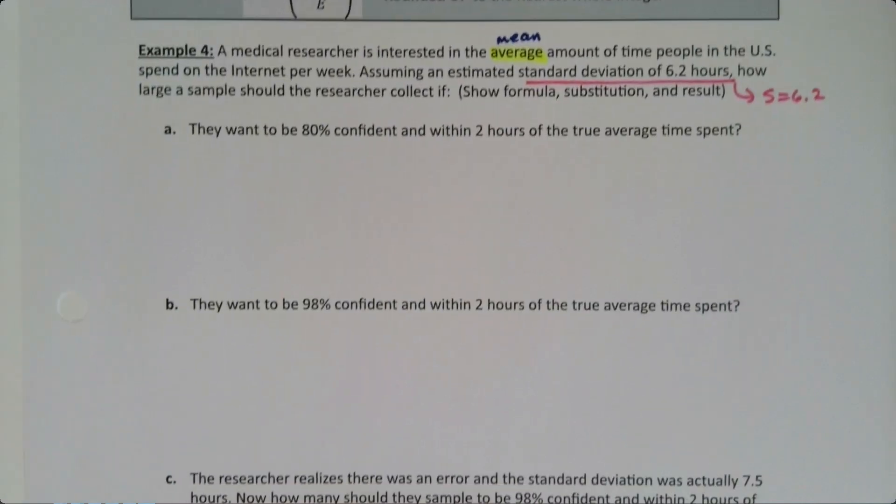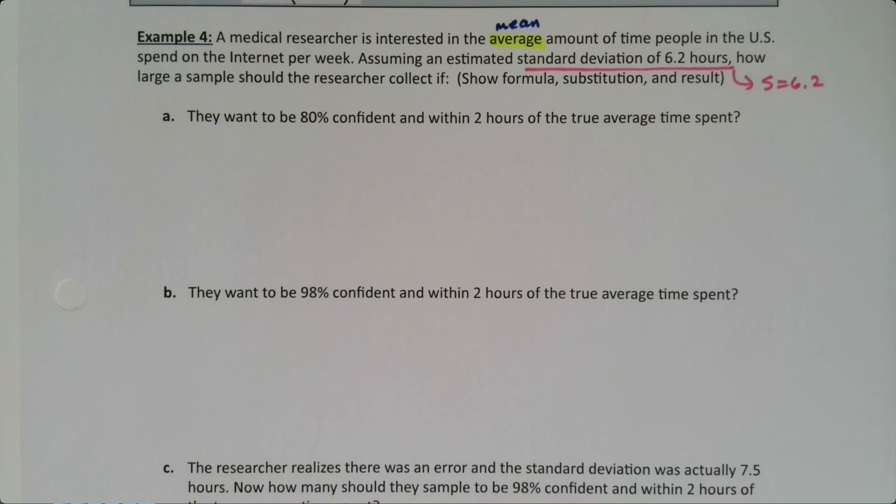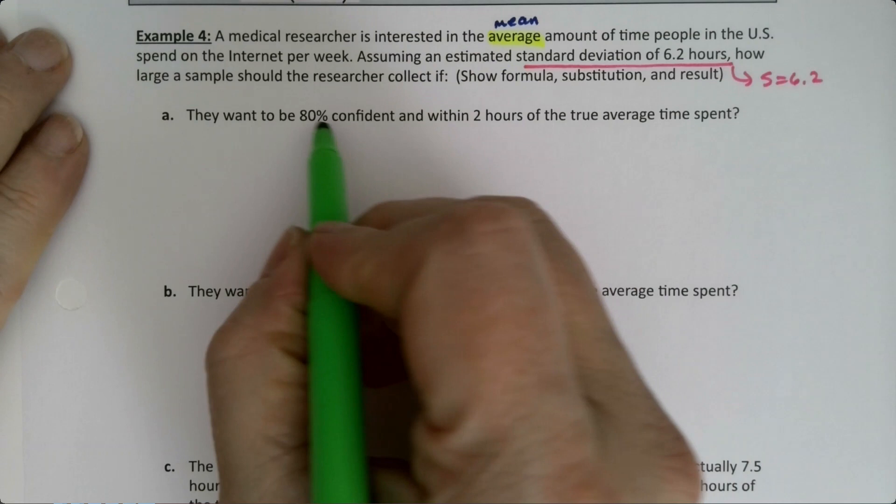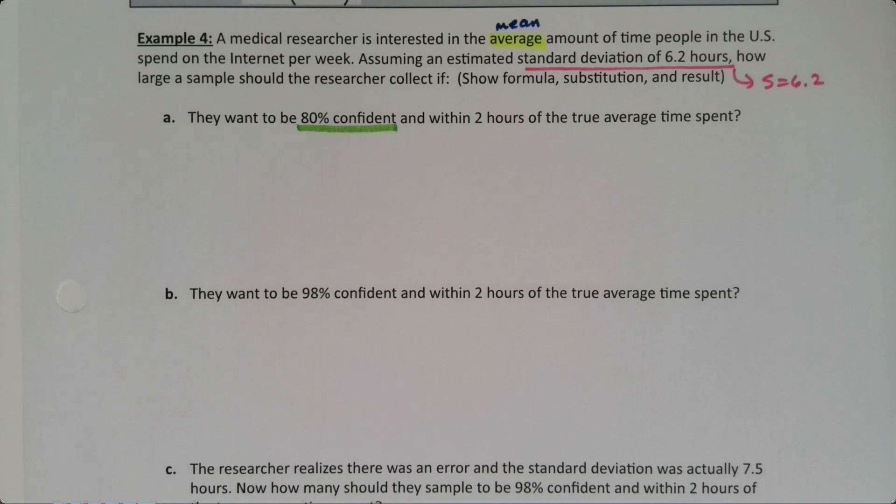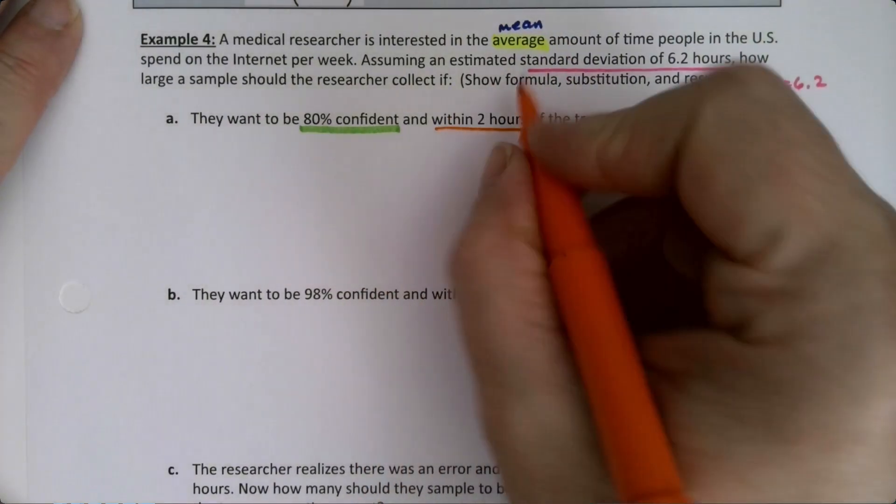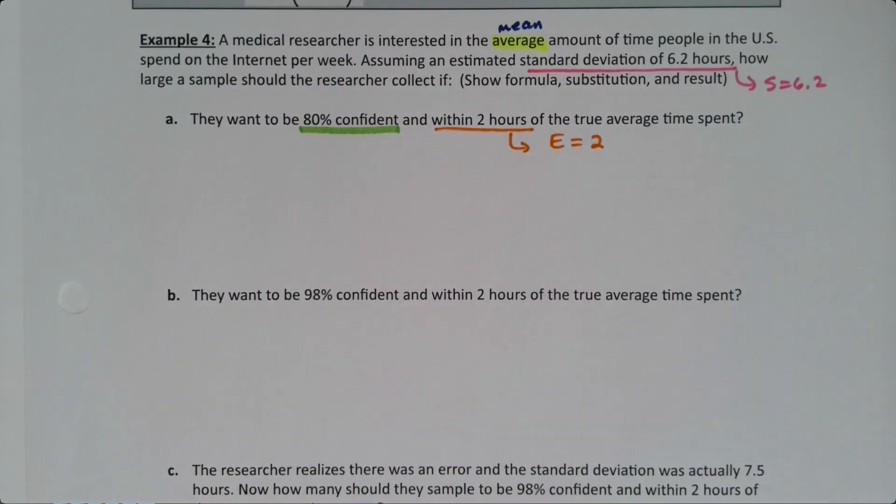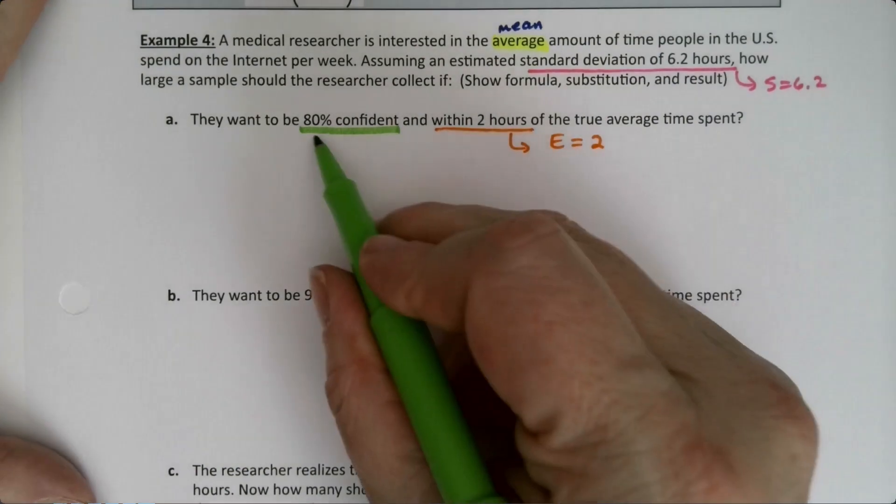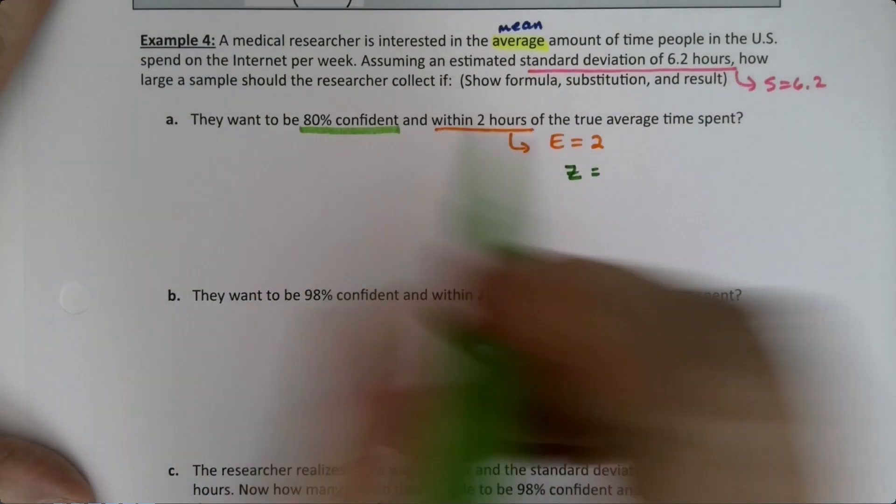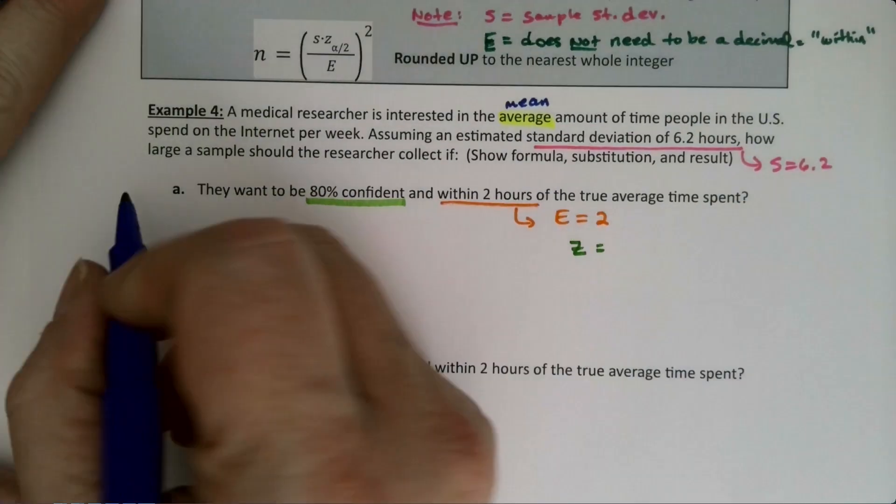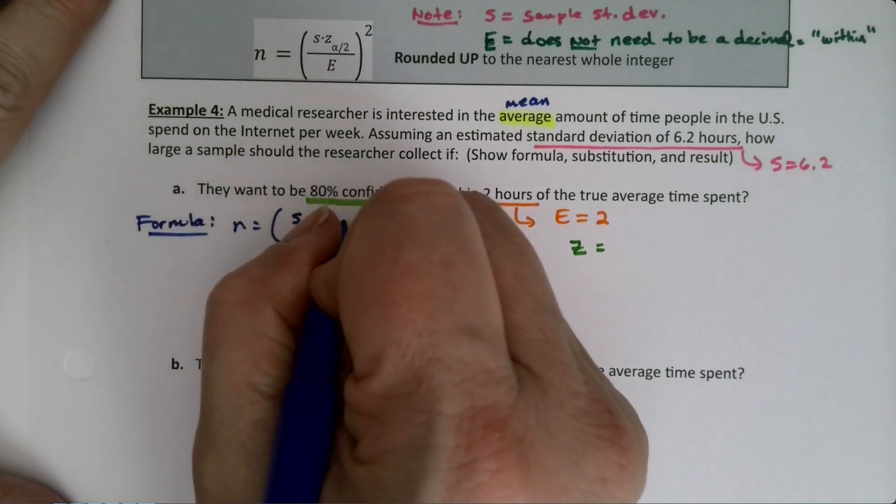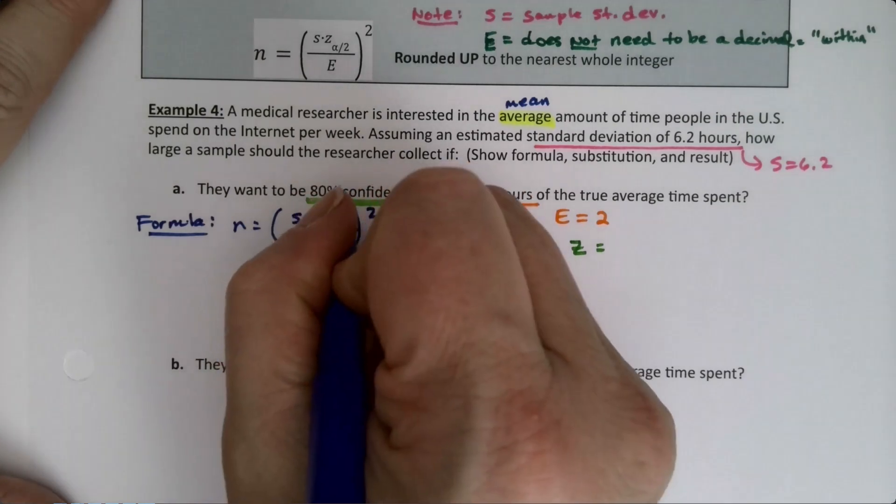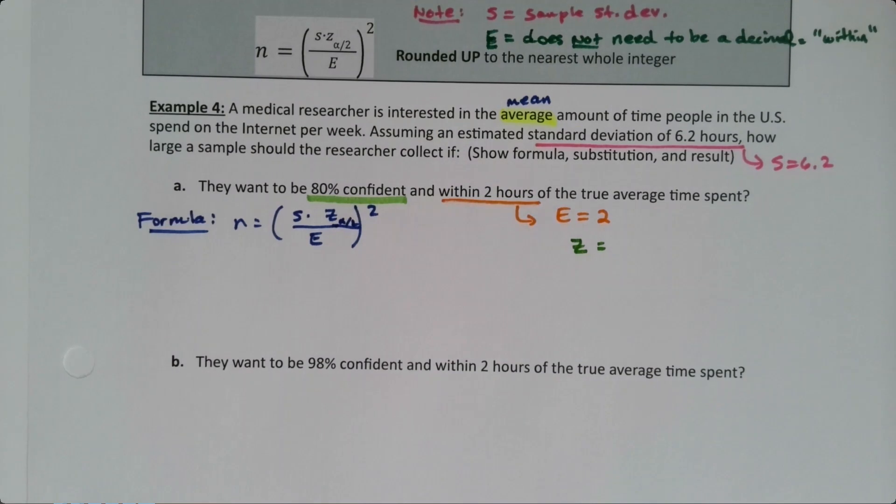Okay, so we're going to be playing with our confidence level a little bit here. The first one wants an 80% confidence level, and it wants to be within 2 hours. So it says within 2. So that's our error right there. So our error, I'll do it in orange. It's right here. Error is 2. And then the 80% confidence gives us our Z. So we can see we're going to need a Z for the formula. I mean, I can write the formula here. Formula. It's N is equal to S times Z over the error squared. And if you want to put the level over 2 subscript, you can. It's not required. All right, so Z.